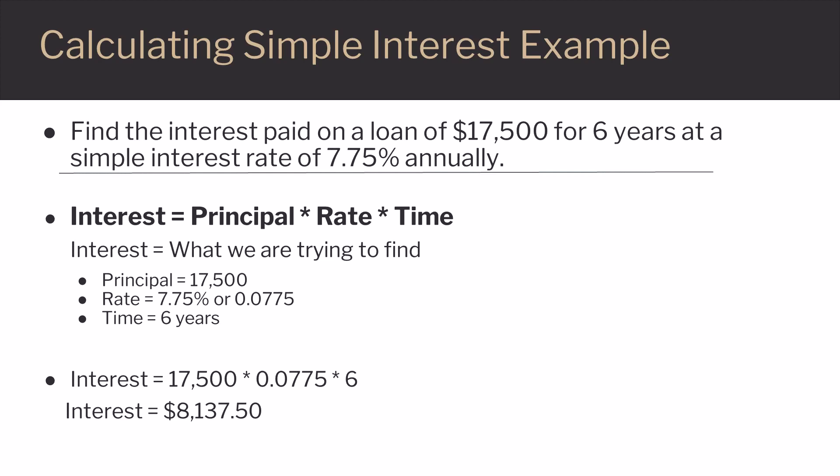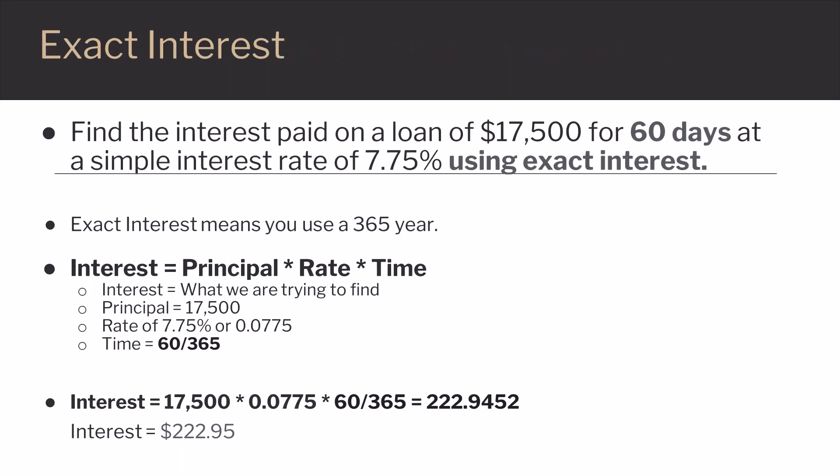What happens when you're given the time of the loan in days instead of years? We'll modify the last example so that now we're borrowing the money for 60 days. There are two different ways to calculate daily simple interest.